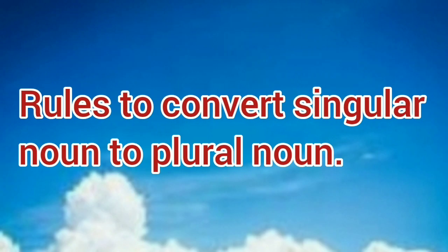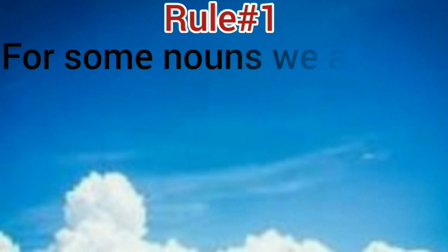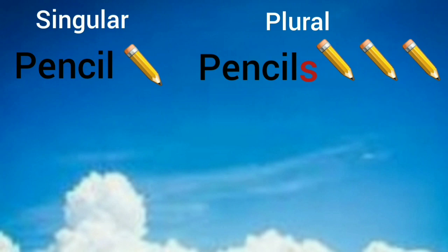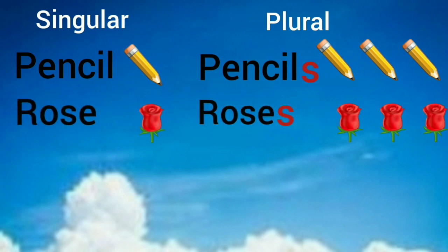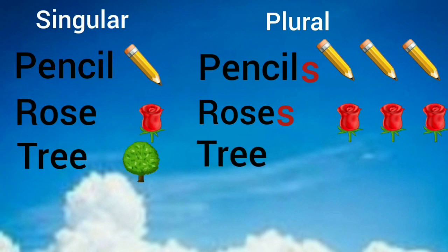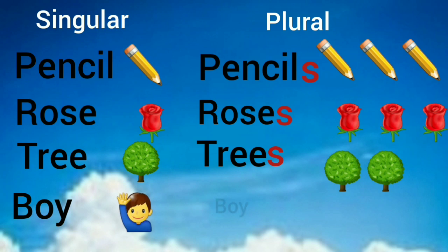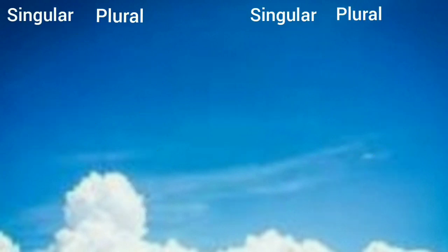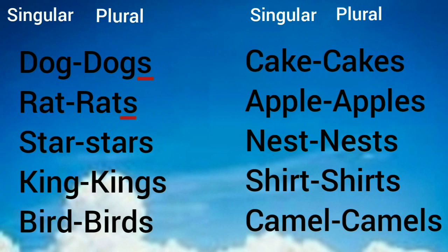Now let us know the rules to convert a singular noun to a plural noun. Rule number one: for some nouns we add -s to show that they are more than one. Examples: pencil-pencils, rose-roses, tree-trees, boy-boys, dog-dogs, rat-rats, star-stars, king-kings, bird-birds, cake-cakes, apple-apples.